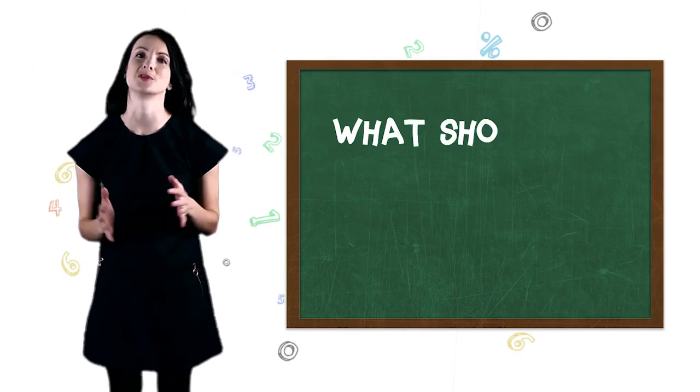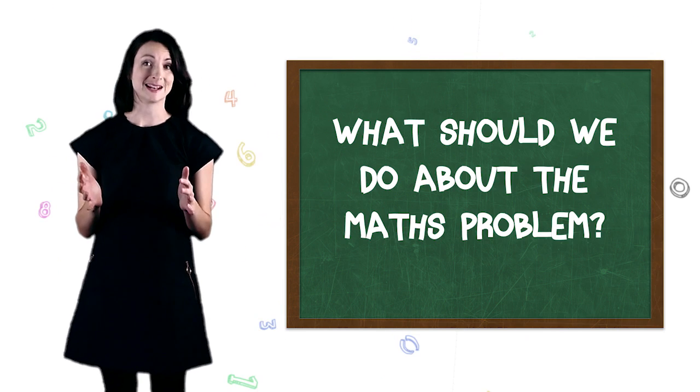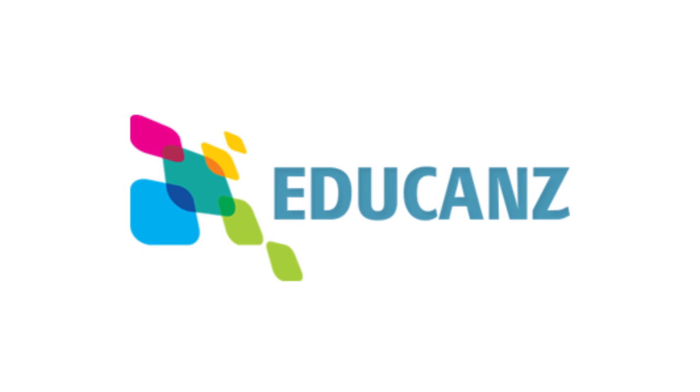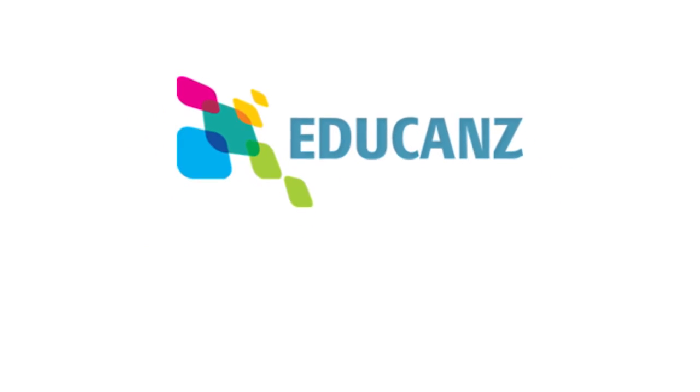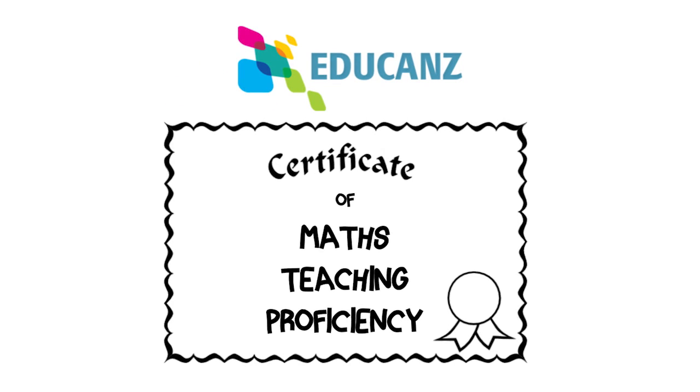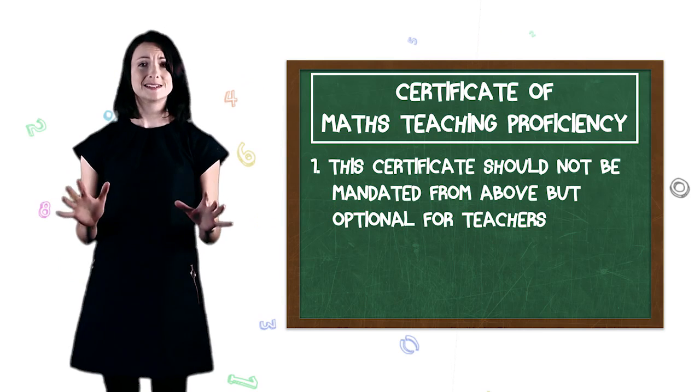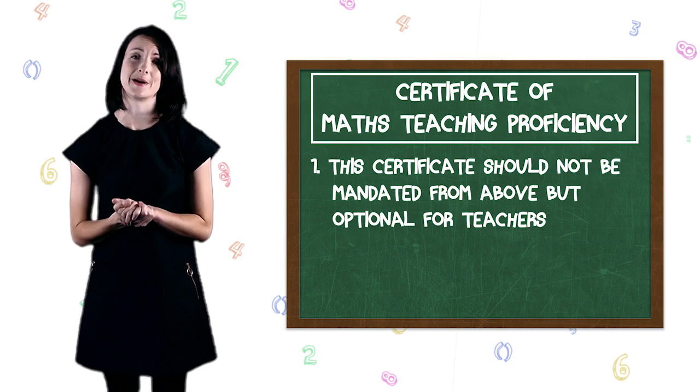So what should we do about the maths problem? At the New Zealand Initiative we have a couple of ideas. First, we think that Educanz, which is the new professional body for teachers, should develop a certificate of maths teaching proficiency. This certificate should not be mandated from above; it should be optional for teachers. Most teachers are really motivated to see their students succeed in school, but if they're not feeling confident in maths themselves, then gaining this certification is a way of developing the skills that they need to be able to teach maths well.